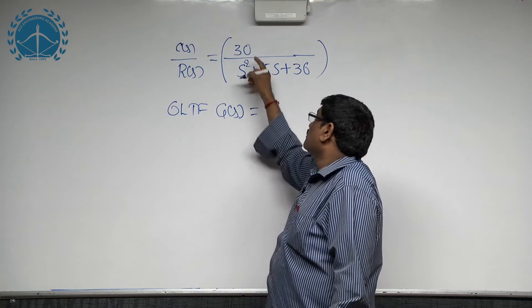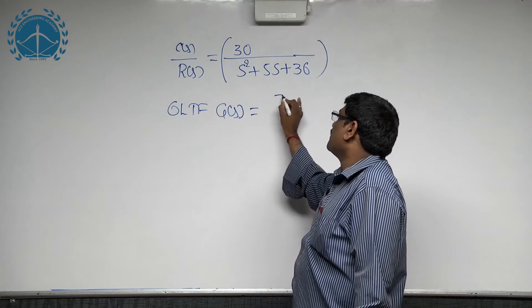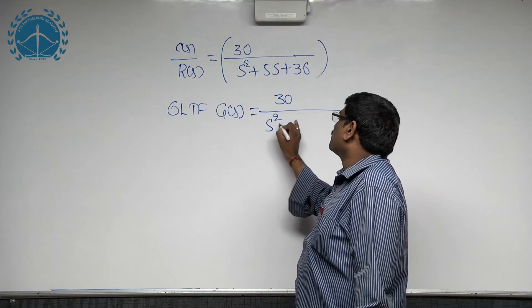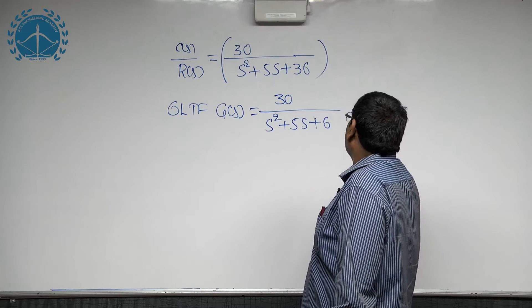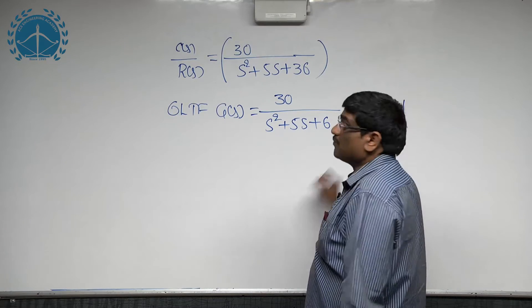That equals 30 divided by s squared plus 5s plus 6. Here given unity feedback, h(s) equal to 1.